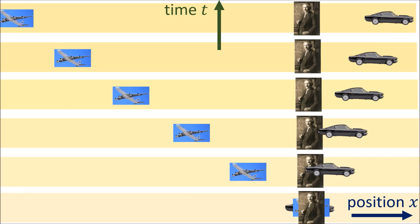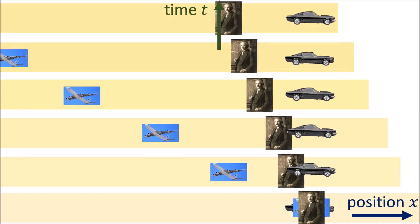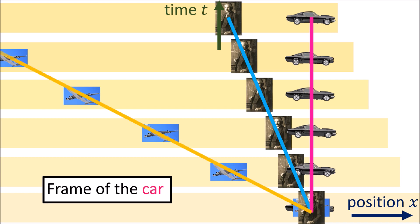Now watch what happens if we slide all these photographs over to the left. We have managed to arrange the photographs so that the car's world line is now vertical. The spacetime diagram is now drawn from the car's frame of reference. Here the car is stationary, the scientist is moving to the left, and the plane is traveling to the left even faster.